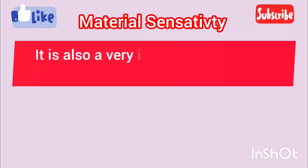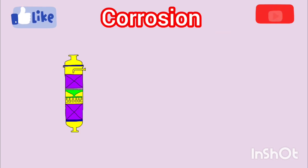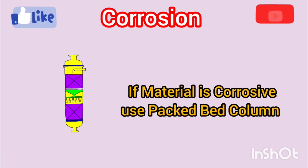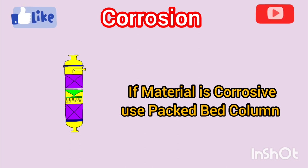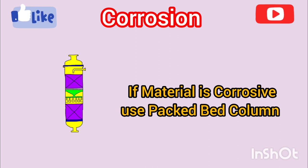Finally, we have corrosion as the fourth parameter. Corrosive material can cause significant challenges in chemical processes. Plate columns can become prohibitively expensive when handling corrosive liquids due to the need for costly corrosion-resistant material. Packed columns, with their compact design, often require less of this costly material, making them a more practical choice when dealing with corrosion. So, in case of corrosive material, you can use backbed column; otherwise, you can use tray column if material is not corrosive.